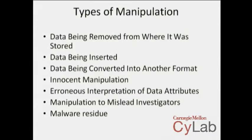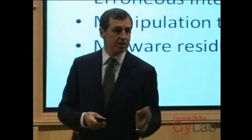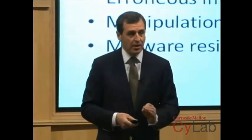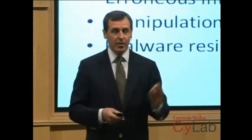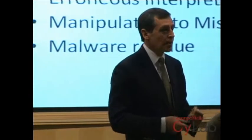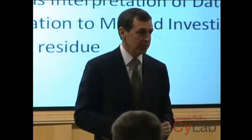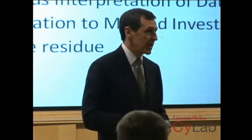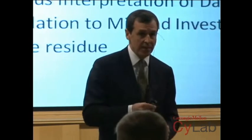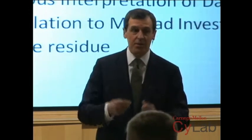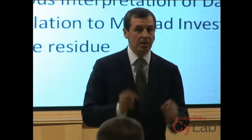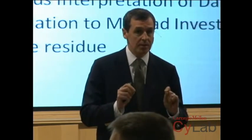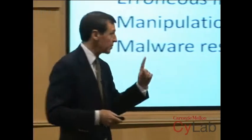Erroneous interpretation of data attributes. You can see me standing up here — I've got some gray hair. For the judges and lawyers we deal with, who are some of the most senior people in the field of jurisprudence, and who are very wise — when they were growing up learning the law and learning evidence, there wasn't a computer near them. And at this point in time, they are often asked to make decisions and interpret attributes of data that seem very straightforward but are often subject to erroneous interpretation. It's a big category, in my experience, of making a mistake.